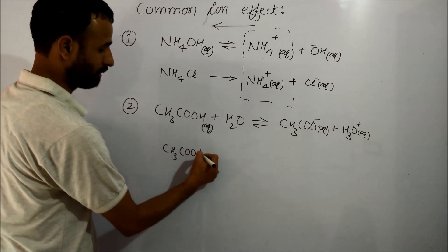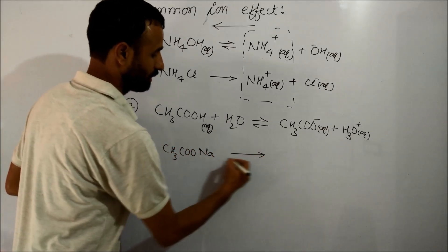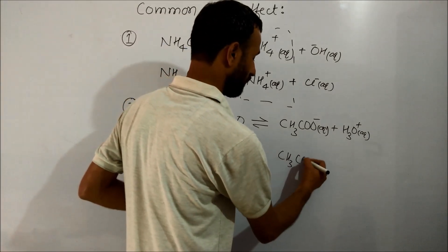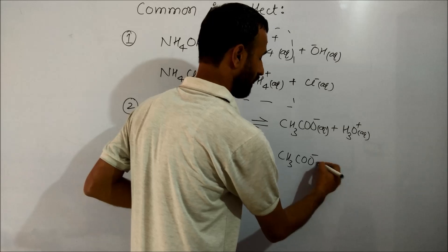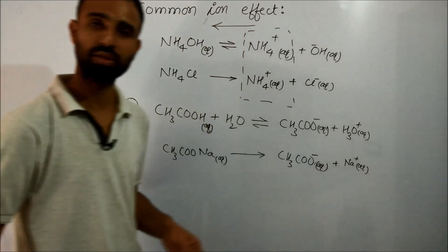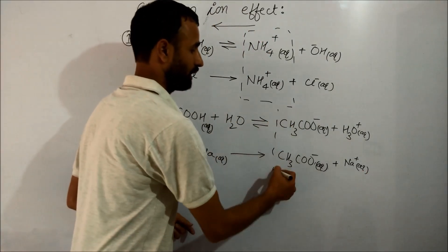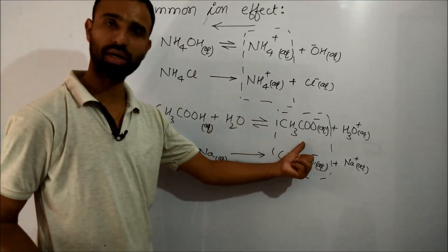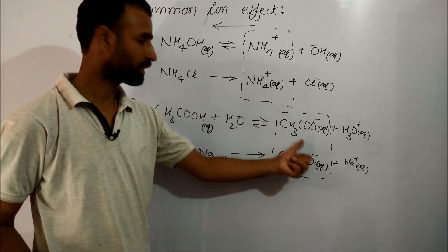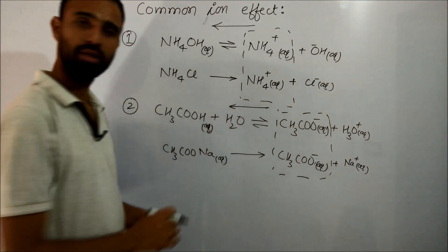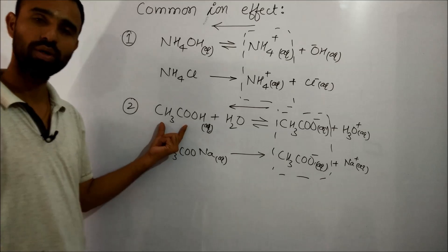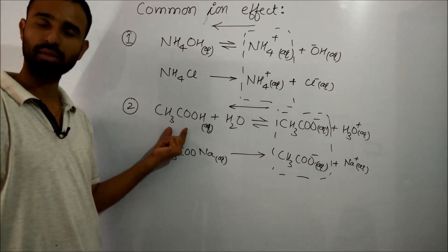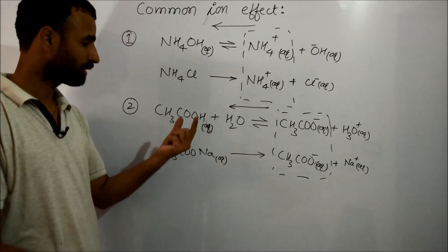And when we add a strong electrolyte like sodium acetate, it dissociates completely to give acetate ion and sodium ion. This is a common ion, and due to the common ion, one of the products is increased in the equilibrium. Equilibrium shifts backward, so dissociation of weak acid is suppressed, is decreased further due to the presence of common ion.